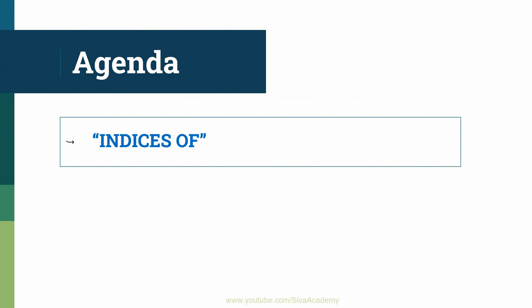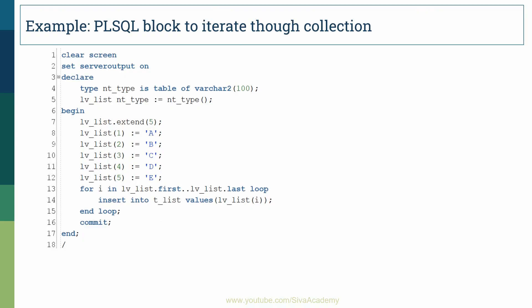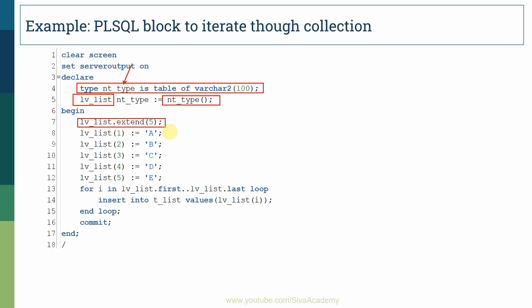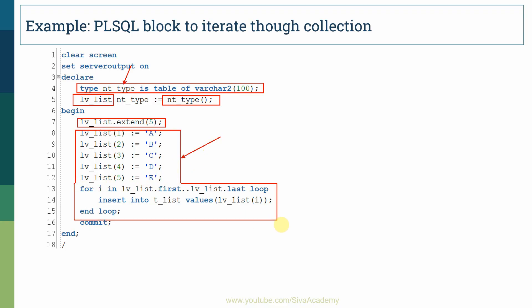There are two keywords: INDICES OF and VALUES OF. In this video, we'll understand with an example how and when to use the INDICES OF keyword, and in the next video we'll cover VALUES OF. I have a simple program where I declared a nested table type variable, initialized it to an empty collection, extended it to five memory locations, stored five values, and used a for loop to insert into a table called t_list.